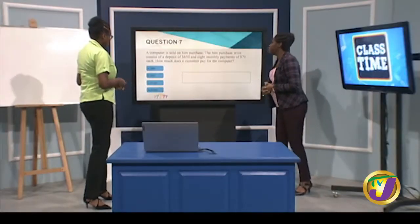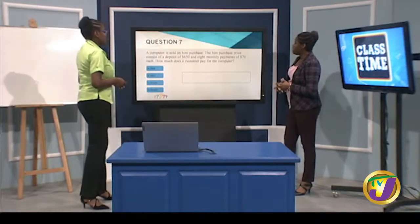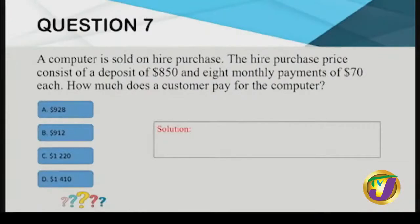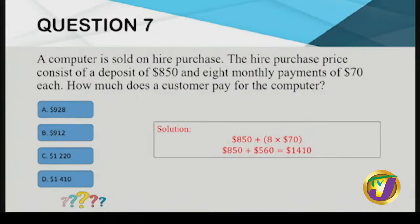The deposit is $850 plus eight payments of $70, which is 8 × $70 = $560. Total = $850 + $560 = $1,410. Option A is not viable since we're paying more than $850. Our answer is D: $1,410.